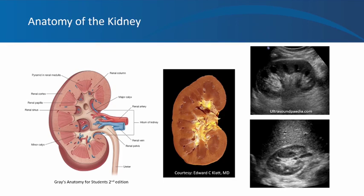Ureters are normally not visible in a healthy kidney unless they are distended due to urine backflow. In the transverse section, you can see the cortex, medullary pyramids, sinus fat, and a blood vessel — most likely a renal vein. This structure is not the ureter because it appears hypoechoic, meaning it contains fluid. A normal ureter is not visible unless distended, so this is most likely a vessel.